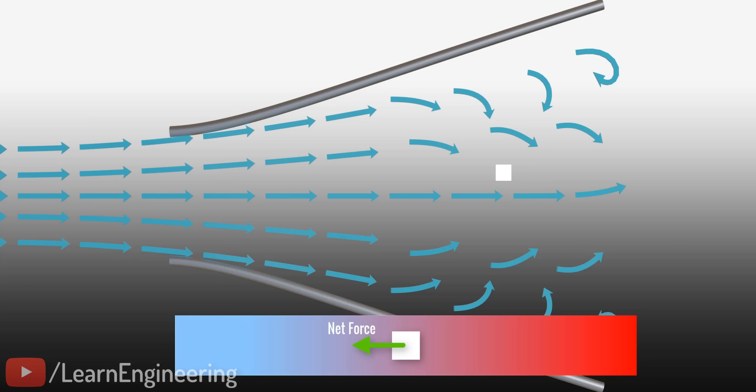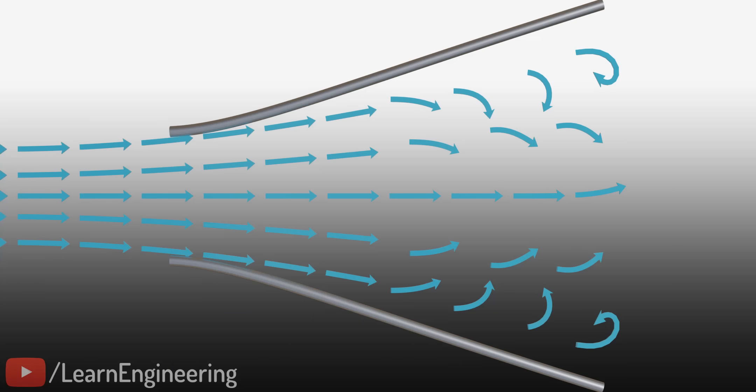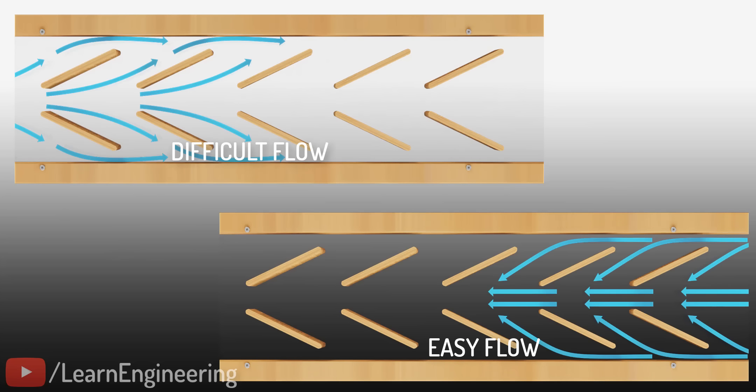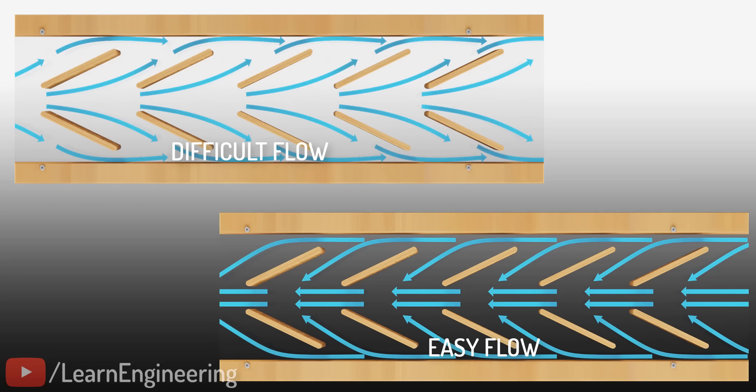This reversal will lead to flow vortices and energy losses. In short, diverging flow is a difficult flow to maintain. It offers far more resistance than a converging flow.